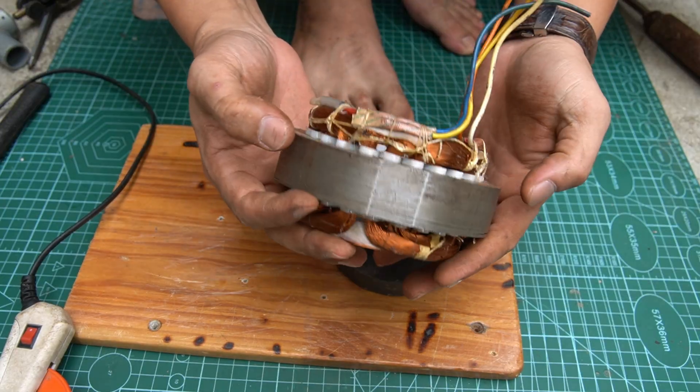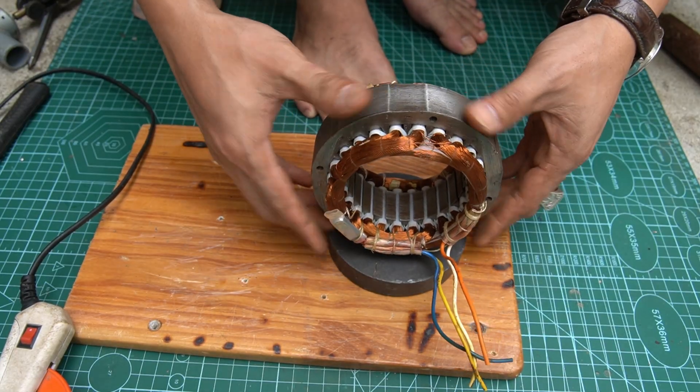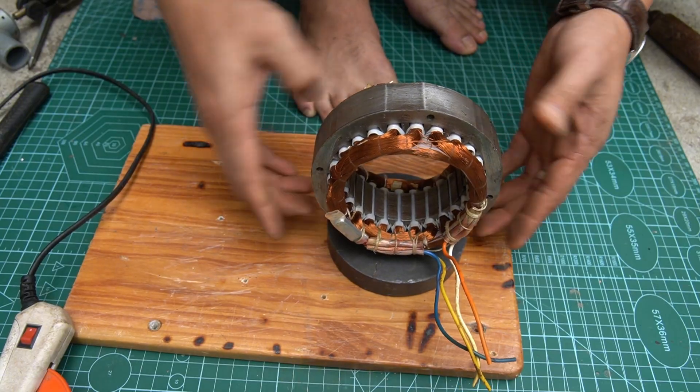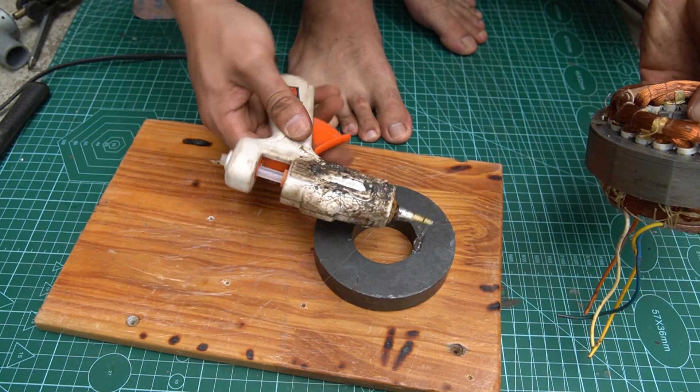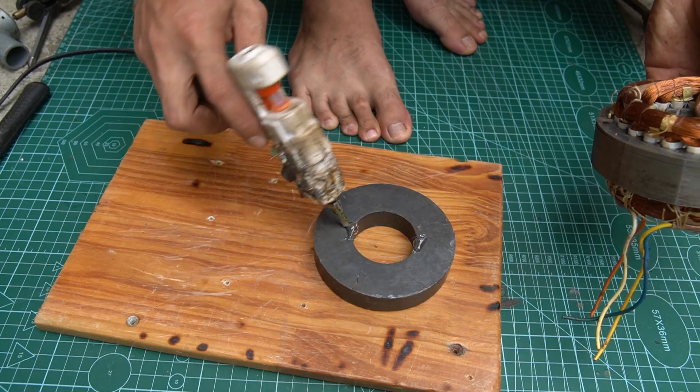To attach it firmly and securely, I'm using strong industrial glue. Next, I'll attach the stator coil on top of that magnet.